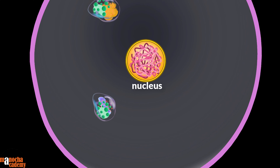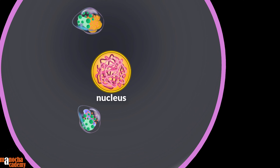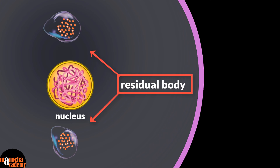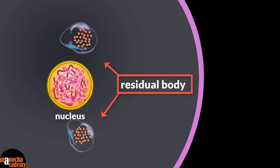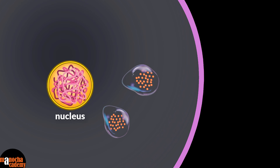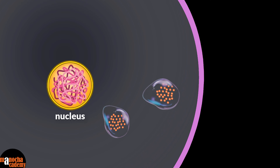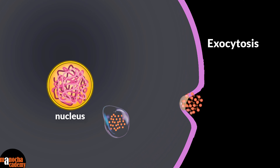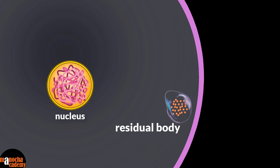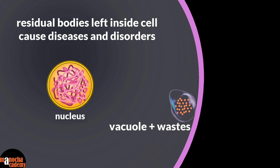After the entire process of digestion has taken place inside the secondary lysosome, what is left behind is called a residual body — a vacuole containing the wastes left after digestion. These residual bodies are normally expelled from the cell by exocytosis. If they accumulate inside the cell and wastes are not excreted, they can cause different kinds of diseases.